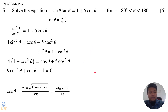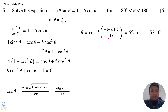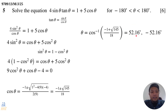Taking the plus case: we apply inverse cosine, and you'll get 52.16 degrees from the calculator. Due to the symmetry of the cosine function over this domain, we must also include the negative angle. So the two solutions from the plus case are 52.16 degrees and negative 52.16 degrees.